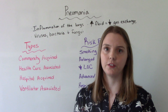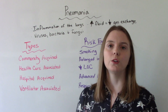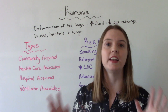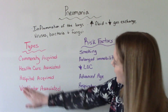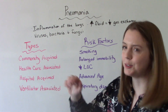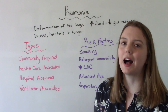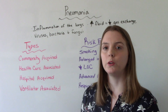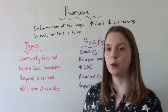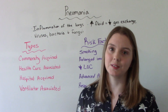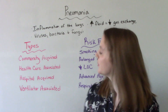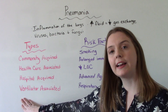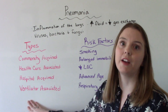Healthcare associated pneumonia is when they get pneumonia following a stay in a healthcare facility, and this includes all healthcare facilities — so clinics, rehabs, assisted living, any of that. Hospital acquired, as you can guess, is related to a hospital stay — this is when they start showing symptoms of pneumonia within 48 hours or more of being admitted. And ventilator associated is within 48 hours or more of being put on a ventilator.